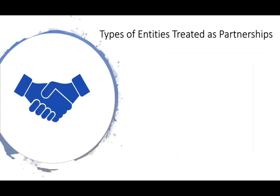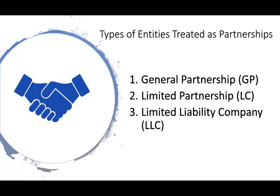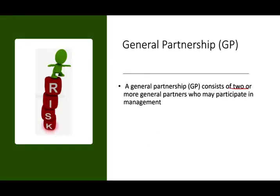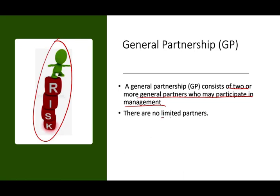Now let's talk about the types of entities treated as a partnership: general partnership, limited partnership, limited liability company, and limited liability partnership. A general partnership consists of two or more general partners who may all participate in management. Simply put, in a general partnership everyone is taking the risk and there are no limited partners. If you have even one limited partner, it's no longer a general partnership — it becomes a limited partnership.